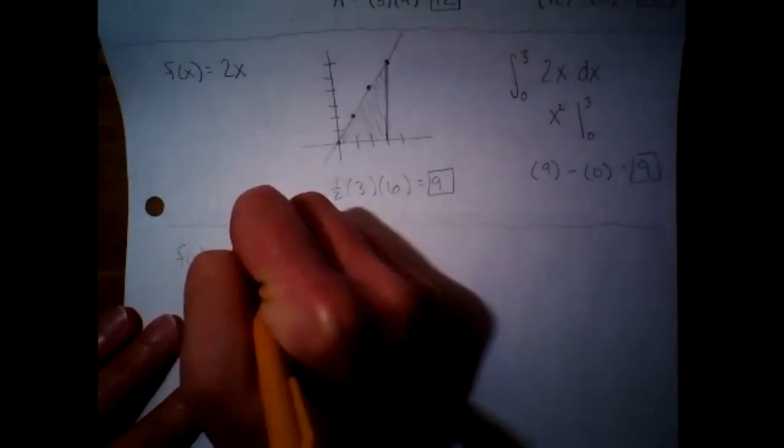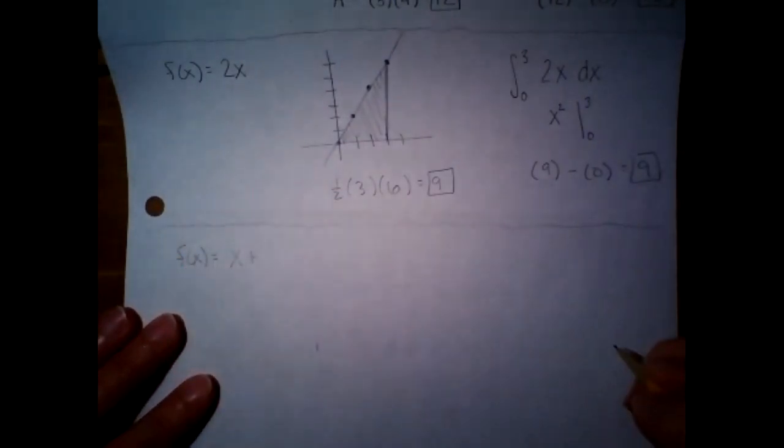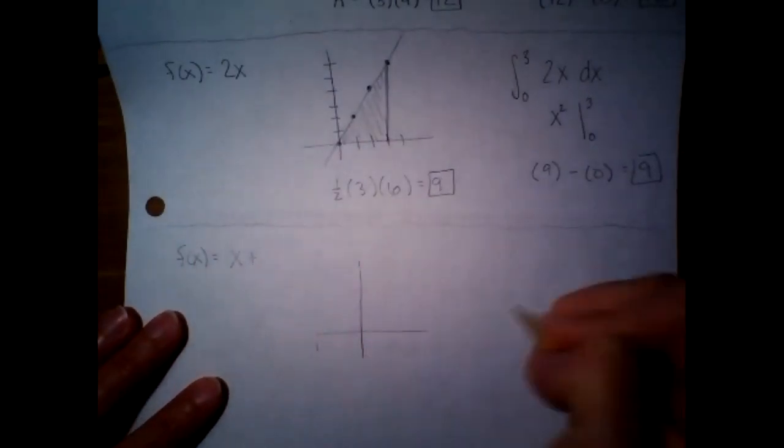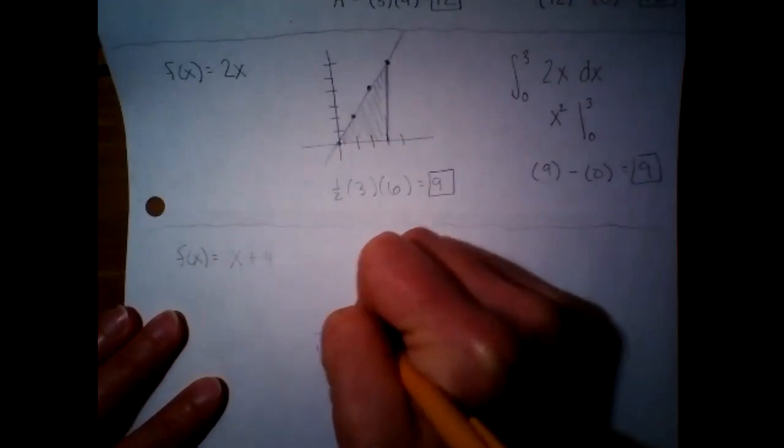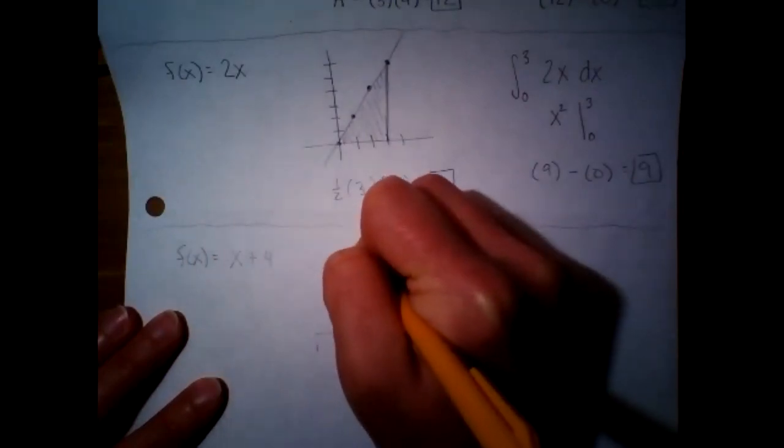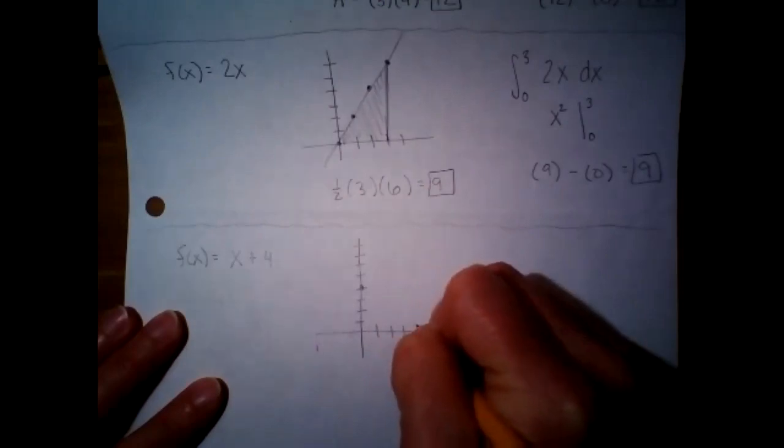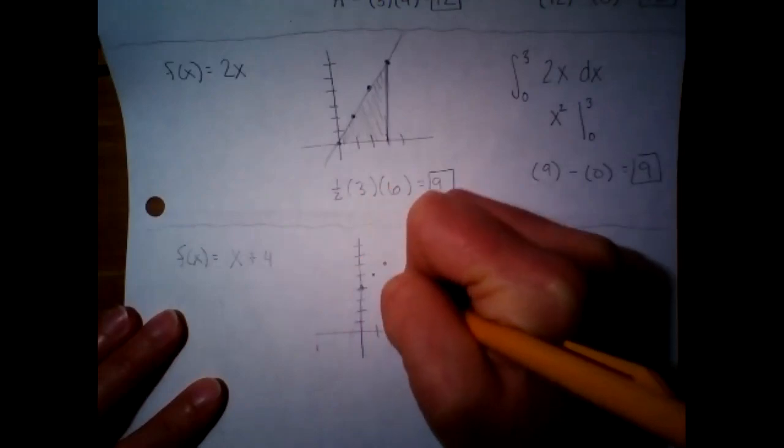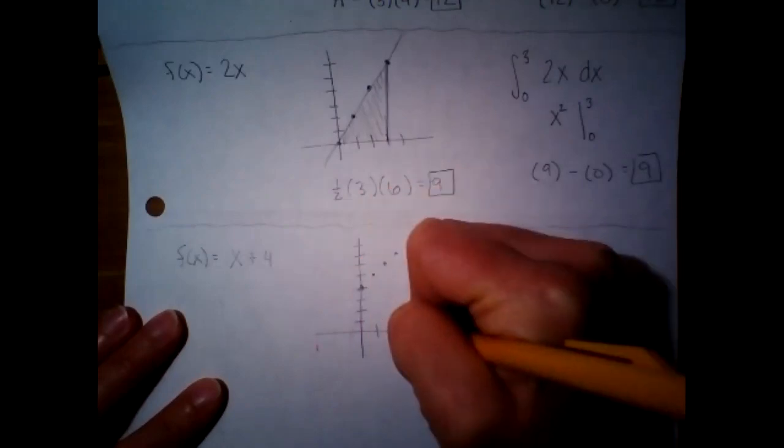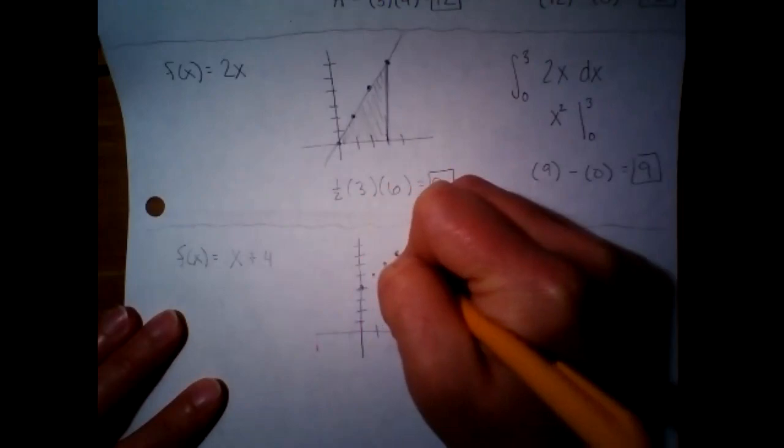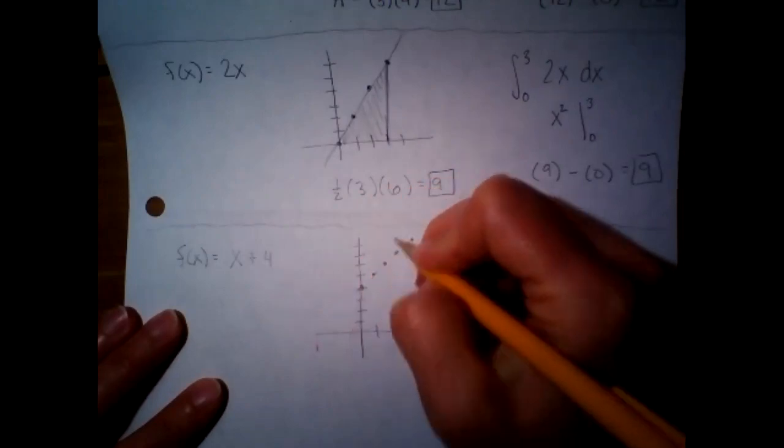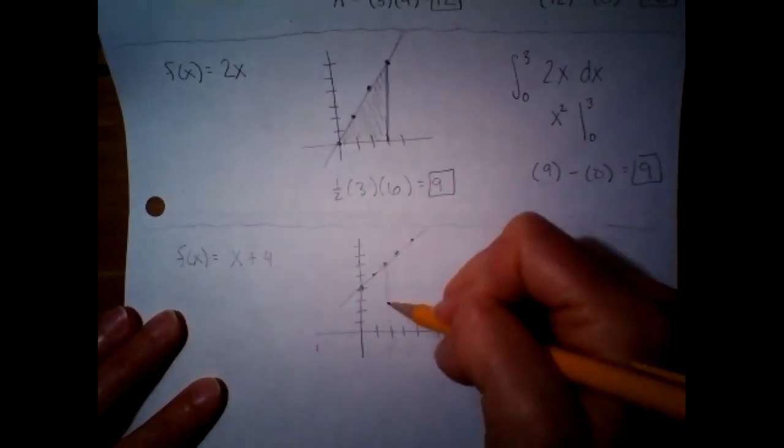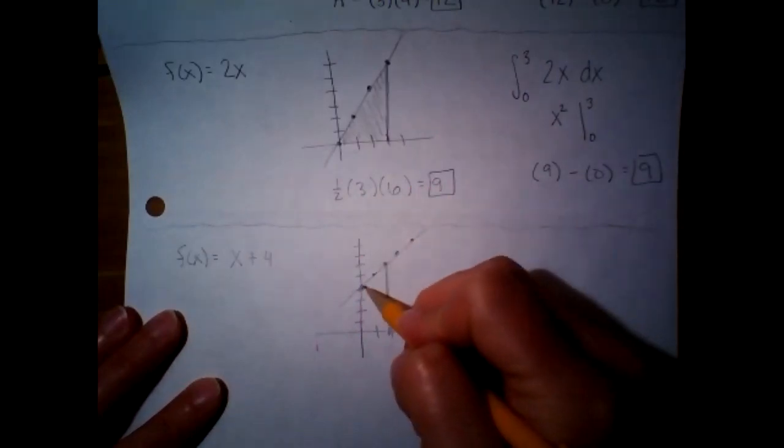So let's make up one like that. Let's do x plus... What do you want it to be? Give me another... How much do you want to move this up? X plus what? Four. All right. And let's go from zero to two. So this is our shape.